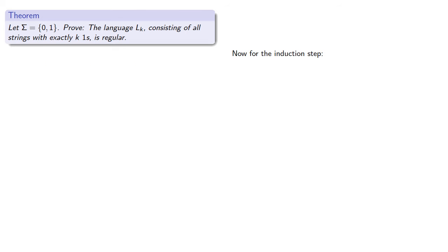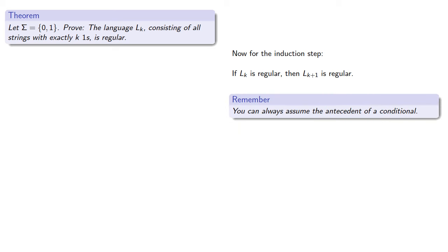Now for the induction step. We want to prove that if Lk is regular, then Lk plus 1 is regular. So remember, you can always assume the antecedent of a conditional. So we can assume that Lk is regular.